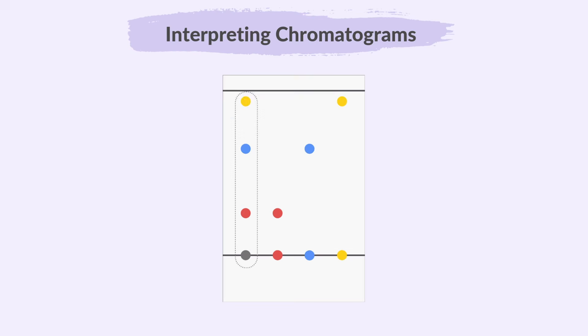In this example, the sample grey ink separates into red, blue and yellow spots — more than one spot — showing it is an impure substance. On the other hand, the red, blue and yellow are pure substances as each produces a single spot.